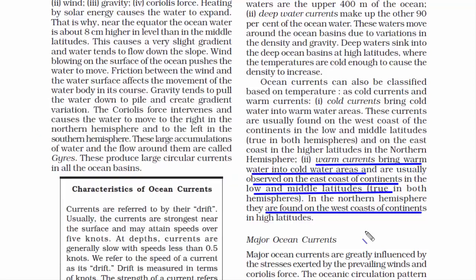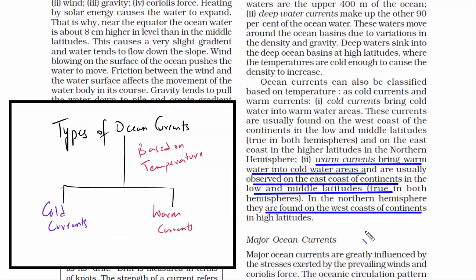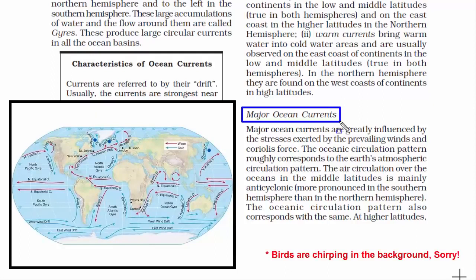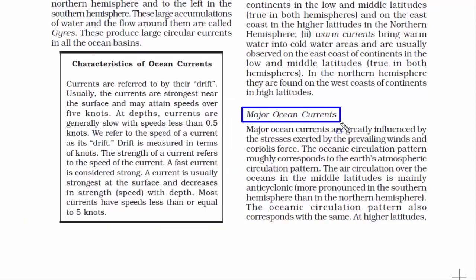So to be clear, we have covered types of ocean currents: one based on depth and the other based on temperature. Now we go to the next topic: major ocean currents. Ocean currents and their patterns are influenced by two major reasons — prevailing winds, which are responsible for moving the surface water of the ocean, and Coriolis force.